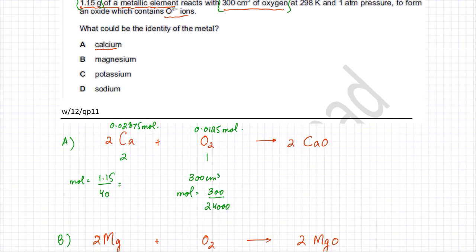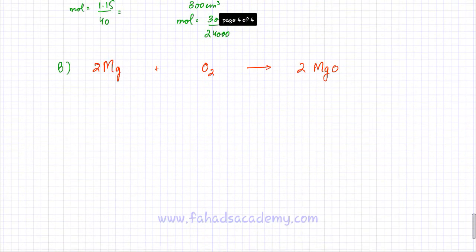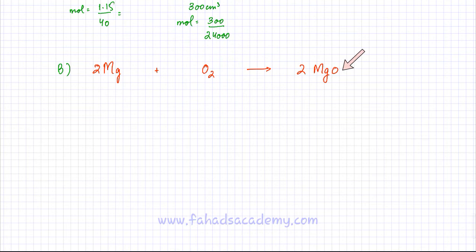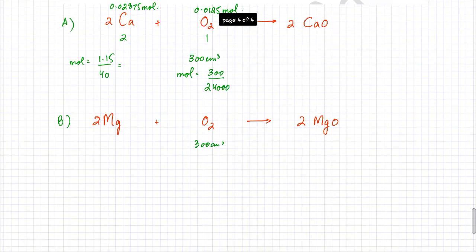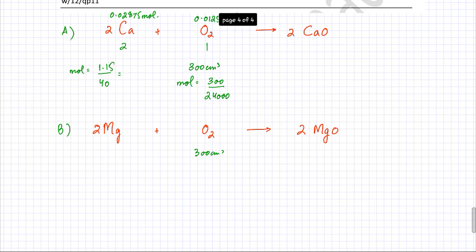Now we test option B, magnesium. We write the equation: Mg + O₂ → MgO. The volume of oxygen is the same — 300 cm³ — so the moles of oxygen are again 0.0125 moles, as calculated previously.